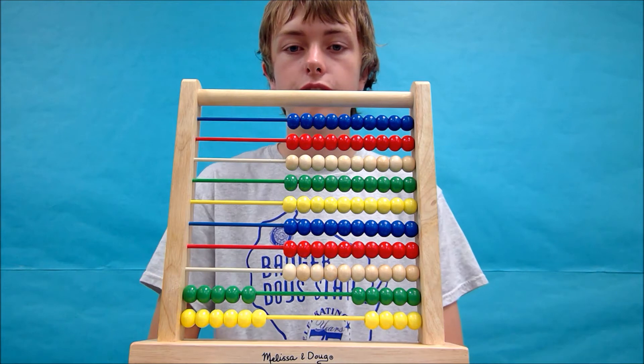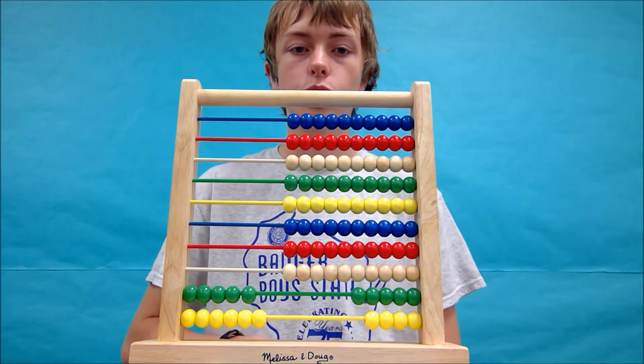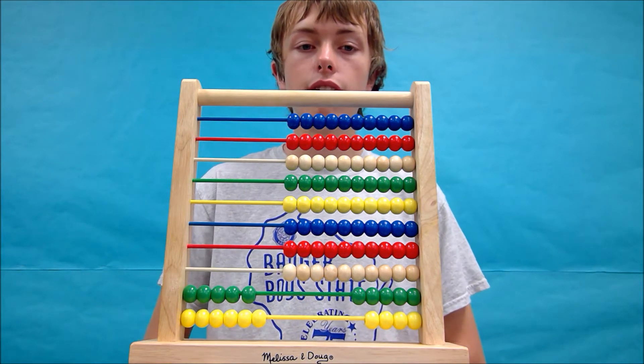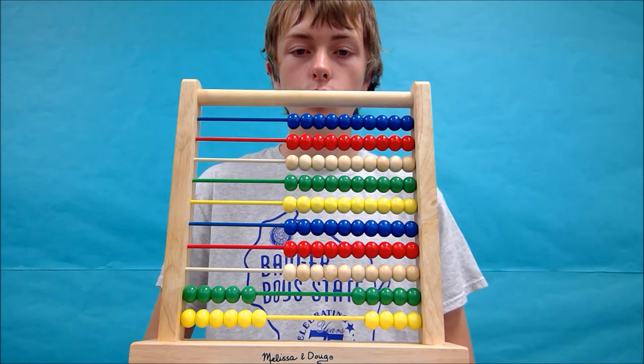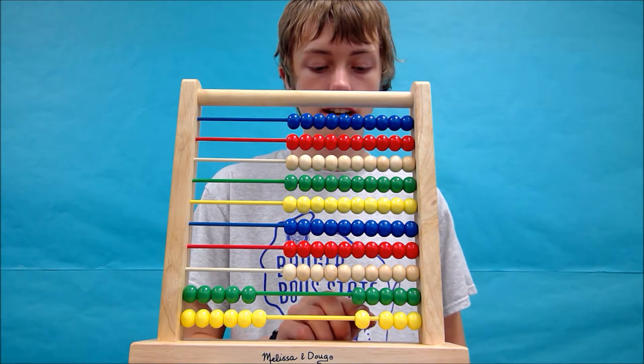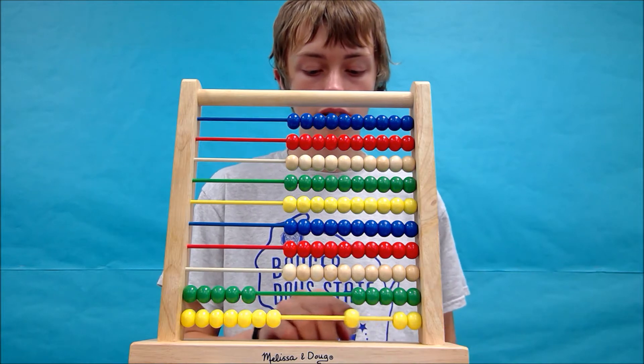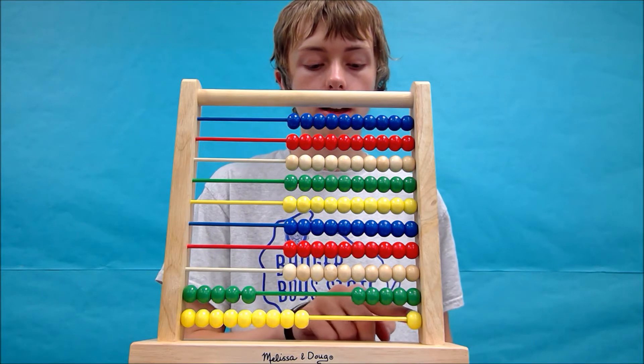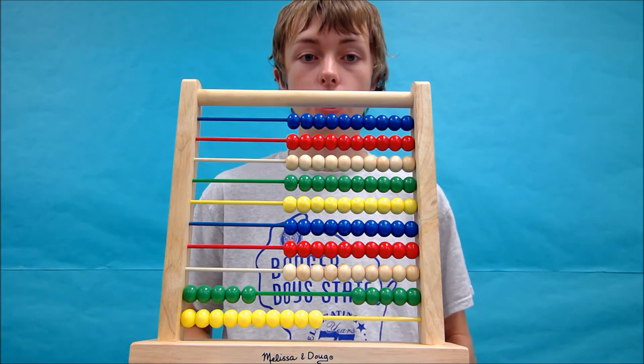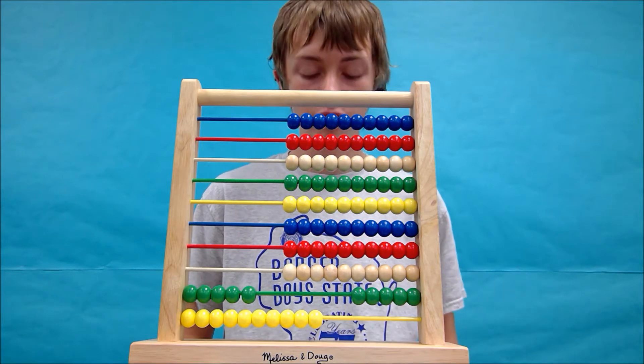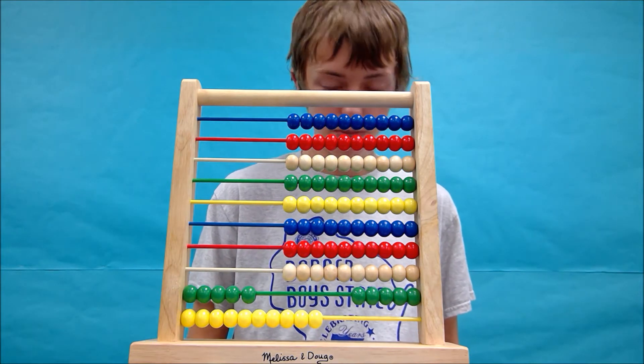We now have 56 and we've got to add 37 to it. So because I have seven in the ones place, I'm going to add seven yellow beads to the bottom. So we can go one, two, three, four. I'm going to write down the number four because we'll need to remember that for later.